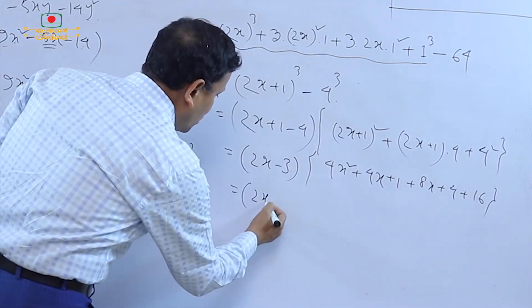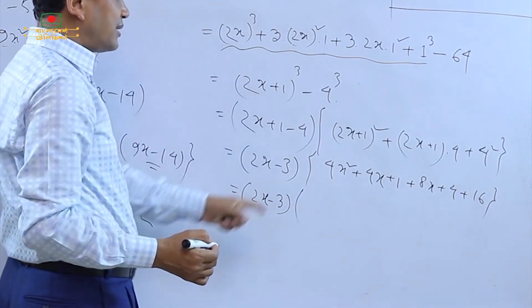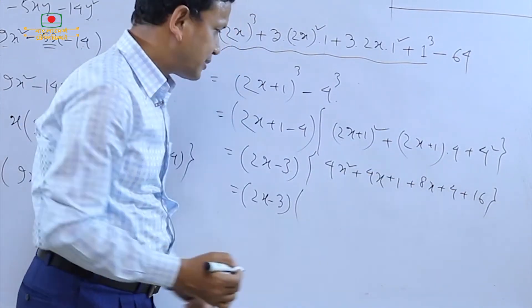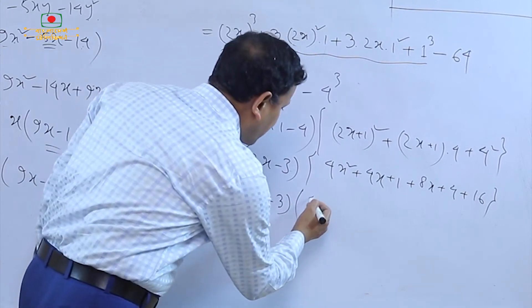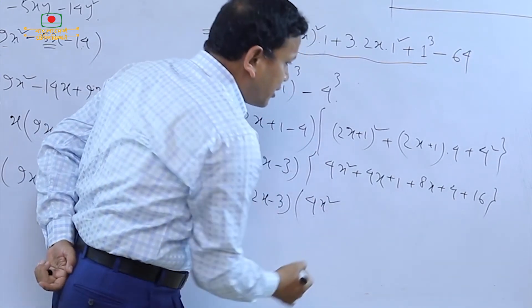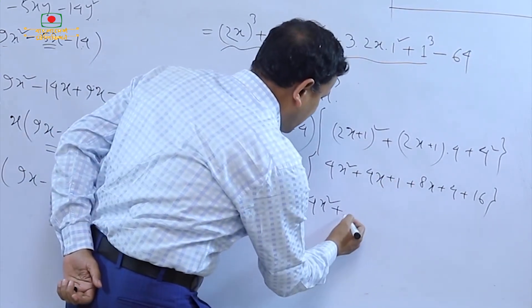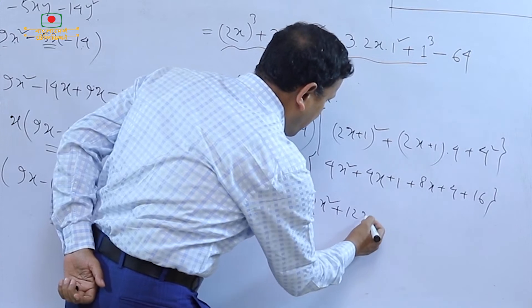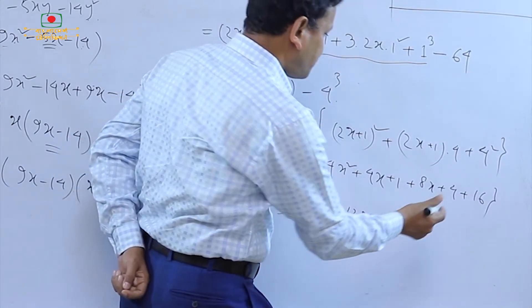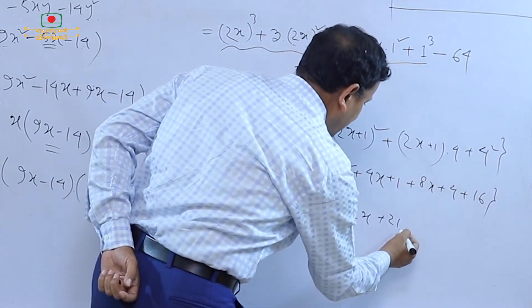A cube minus b cube is equal to b. This is the value of 2x minus b cube — a cube minus b cube. This is the value of 2x minus b cube.